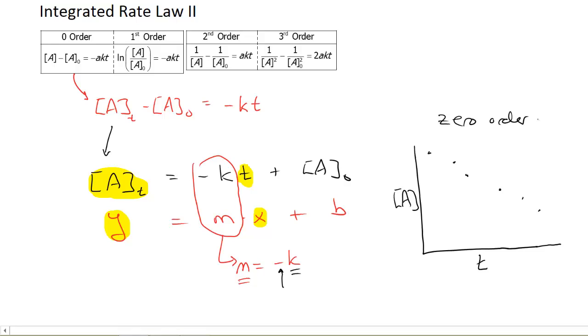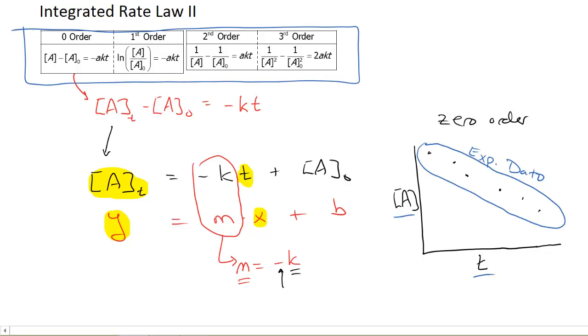You might ask, what's the use of all this? Well, the way I would go about using this information is I would first take some experimental data for a unimolecular reaction - concentration versus time data. If I take concentration versus time data for any reaction, I can then make four different graphs with each one of these four integrated rate laws.